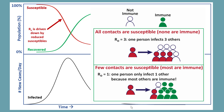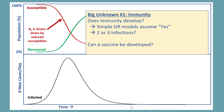Now, there's a major assumption here, which comes to our first big unknown, and that is: will immunity develop? These simple SIR models assume that yes, immunity will develop and that the susceptible fraction will reduce. The problem is we don't know that yet. We don't know whether immunity will develop after one infection — will it take two or three infections? Another big unknown related to immunity is: can a vaccine be developed? Many countries and many companies are trying to develop vaccines, but we don't know how long it will take.